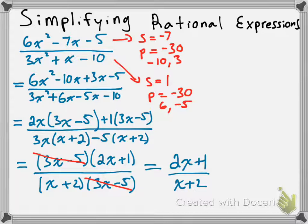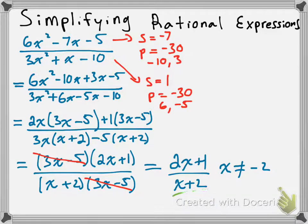So, 2x plus 1 over x plus 2 is the simplified version of the original rational expression we started with. However, there is one thing we need to mention. In the denominator, x plus 2, we're only allowed to include certain values of x, because if we have certain other values, we're going to be dividing by 0. Namely, we have to restrict x from being certain values — specifically, x is not allowed to equal negative 2, because if x is negative 2, then x plus 2 equals 0 and we would be dividing by 0.